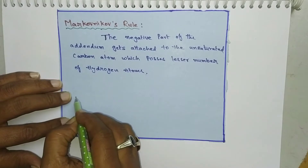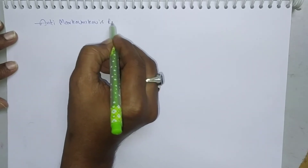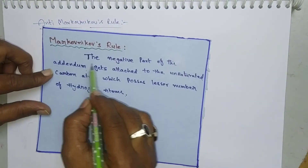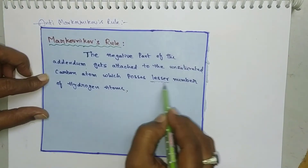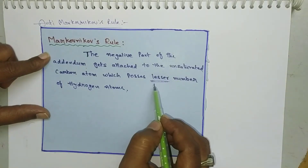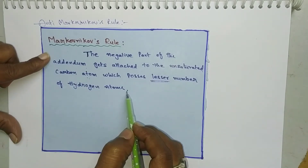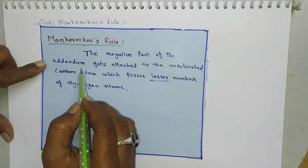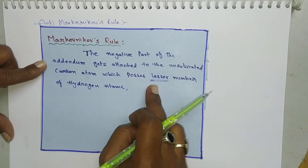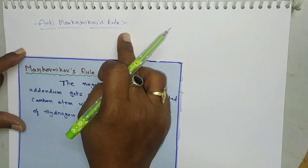Now let us have a look at anti-Markovnikov's rule. There is a small difference between Markovnikov's rule and anti-Markovnikov's rule. In Markovnikov's rule, the negative part of the addendum gets attached to the unsaturated carbon which possesses fewer hydrogen atoms. But in anti-Markovnikov's rule, the negative part of the addendum gets attached to the carbon having a higher number of hydrogen atoms. Addendum means the reagent which is to be added, and the reagent consists of both a positive part and a negative part.